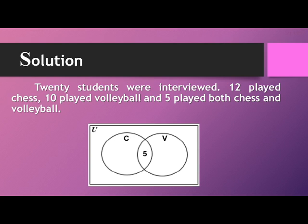Next, ten played volleyball. Since we already have five students who played volleyball, we will subtract it from ten: ten minus five equals five. Last, twelve students played chess. Since we already have five students who played chess, we will subtract it from twelve: twelve minus five equals seven.